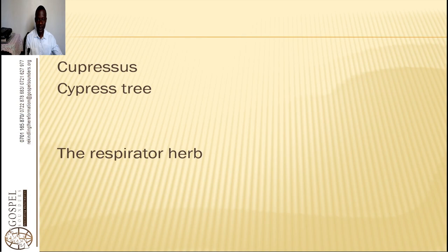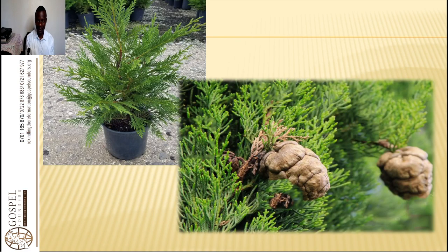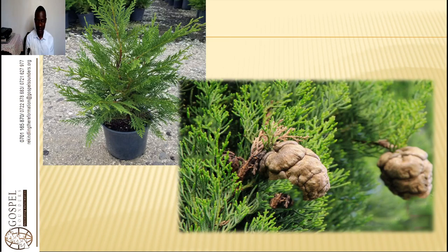We are looking at this important herb: the cypress tree. The cypress tree is known as a respiratory herb. It boosts circulation. It is one of the most important, oldest remedies that has been used over time. Cypress almost grows everywhere and can grow in any place. It was used in old times from the beginning to treat very many complications. The tree is very important in treating many complications.